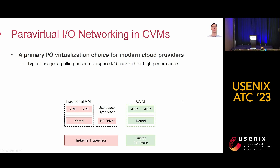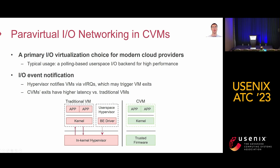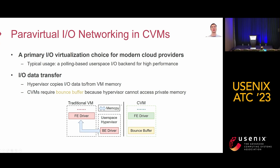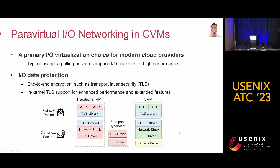The last background is VirtIO networking in CVMs. VirtIO is a primary I/O virtualization choice for modern cloud providers. A typical usage is to deploy a polling-based user-space I/O backend for high performance. For I/O event notification, the hypervisor notifies the VM via virtual interrupts, which may trigger VM exits. CVM's VM exits have higher latency compared to traditional VMs due to longer VM exit paths. For I/O data transfer, the hypervisor copies I/O data to and from VM memory. However, since the hypervisor cannot access private memory, CVMs require a bounce buffer to perform as I/O staging memory. For I/O data protection, usually end-to-end encryption such as TLS is enforced on the I/O data. Besides, there is also internal TLS support for enhanced performance and extended features.